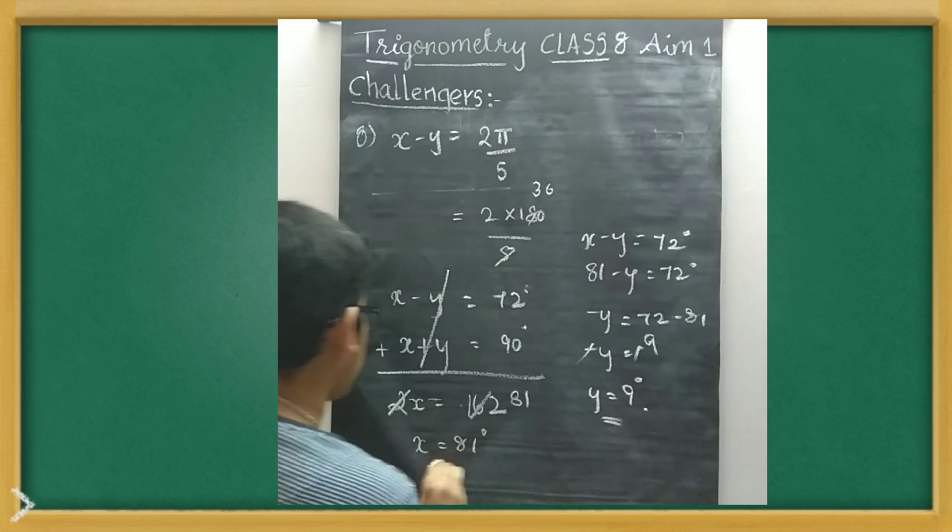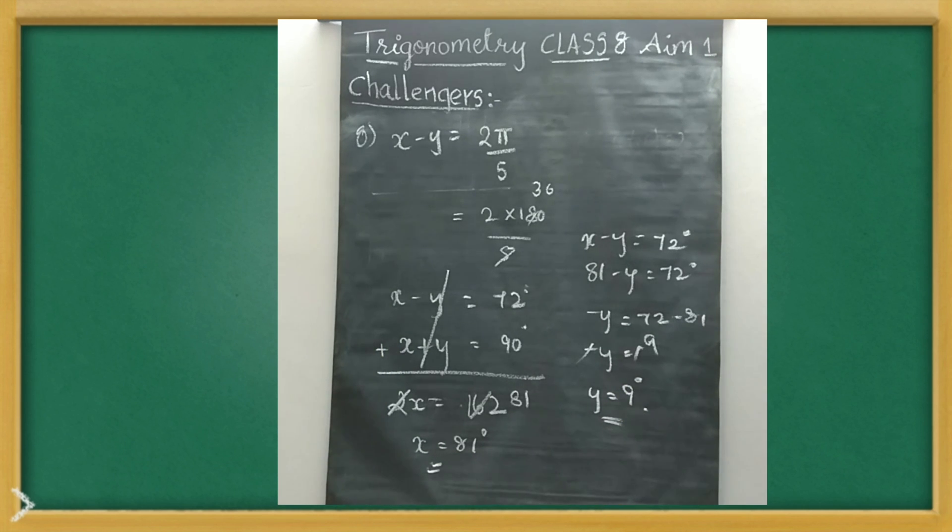Actually by seeing this one way we can understand, because that's complementary. Complementary means this 81 means obviously that will be 9. When you add up it is 90. So it's very simple. Instead of doing that also you can directly do it. With this we completed challenges. Now we'll switch to classroom packages in the next video.